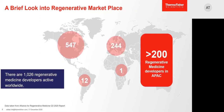Now let's look at how many regenerative medicine developers are out there and how they are dispersed around the globe. There are more than 1,000 active developers currently, with most found in North America and Europe. In the Asia-Pacific region, there are currently more than 200 active developers. Now that we've had a brief look into the regenerative medicine market, let's see what role centrifugation plays in the typical cell therapy workflow.